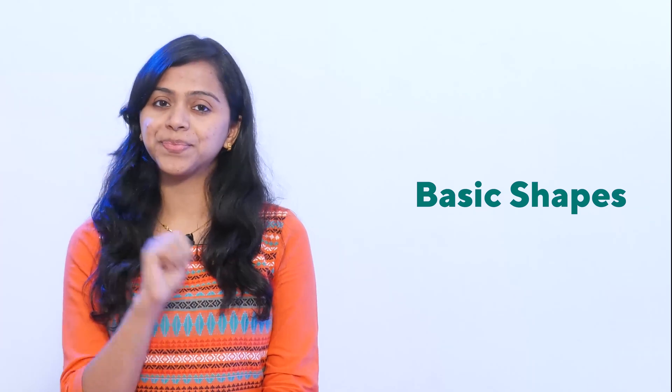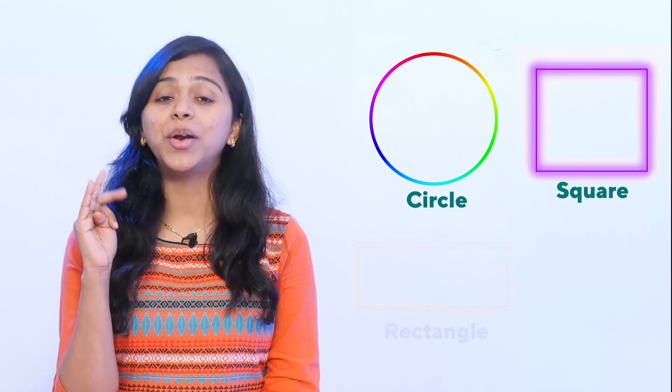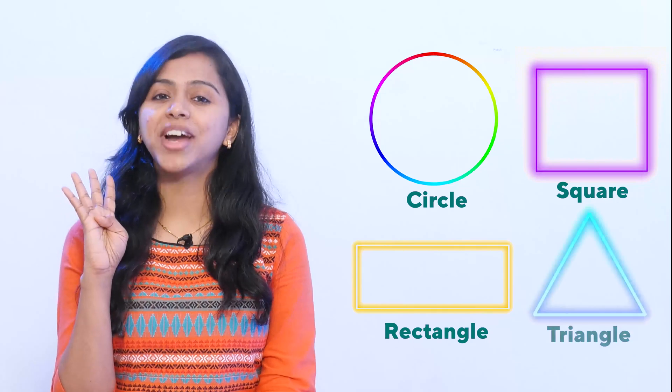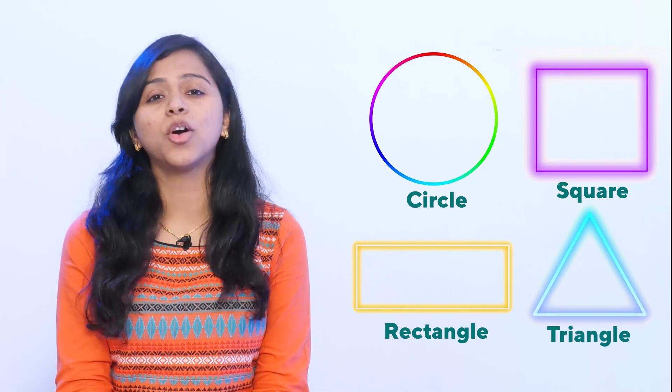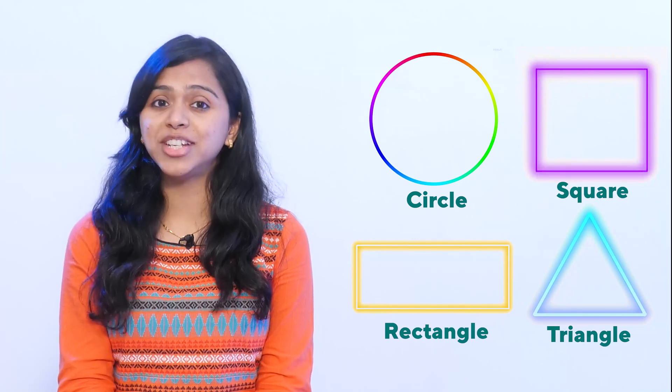Every day in our life, boys and girls, we come across so many different things and all these things are made up of different shapes. Can you think of some basic shapes that you come across every day? Can you tell me at least four of them? Circle, Square, Rectangle, and Triangle. These are called the basic shapes and we come across these shapes almost every day. Now let's look around our house and see if we can find a few things that look like these shapes.